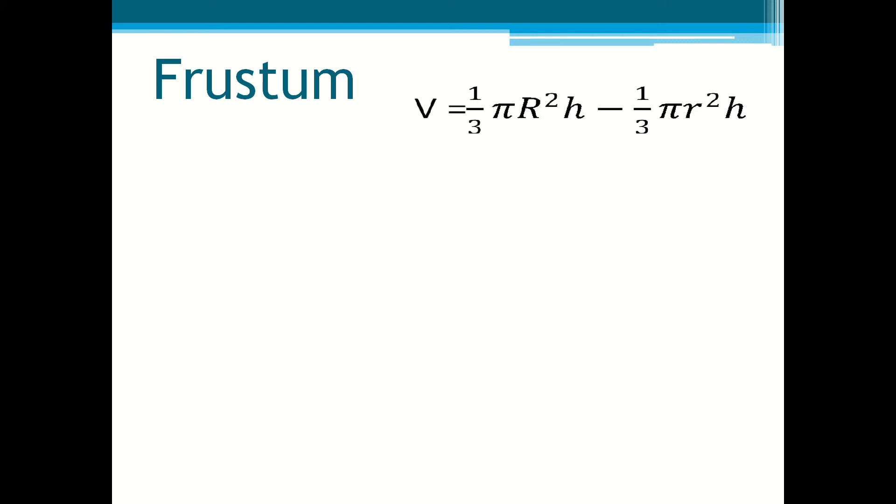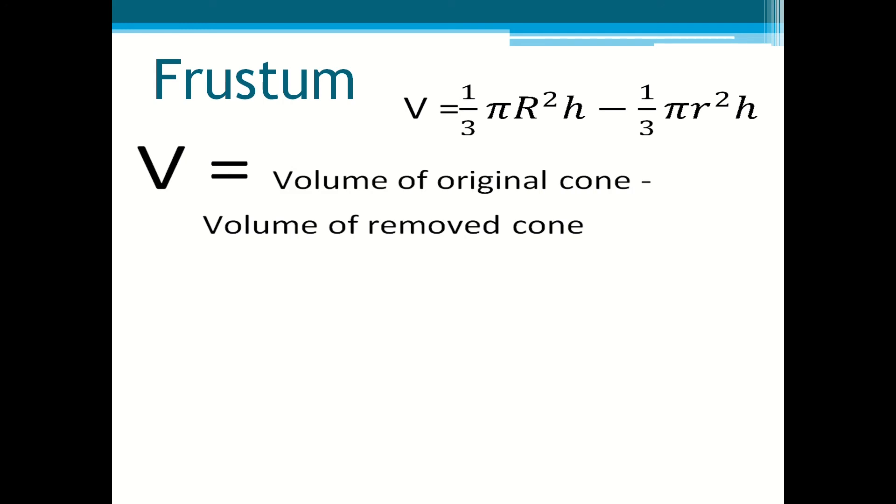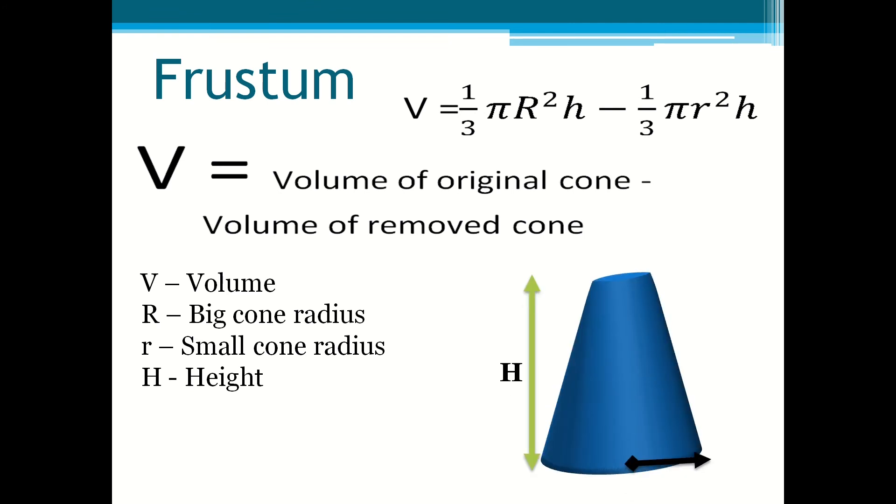Frustums. Frustums essentially is the volume of the original cone minus the volume of the removed cone. So it is volume of the big cone minus volume of the small cone. V is for volume. The big R is for the big cone radius. The small r is for the small cone radius and H is for height, which can be seen in a diagram below.